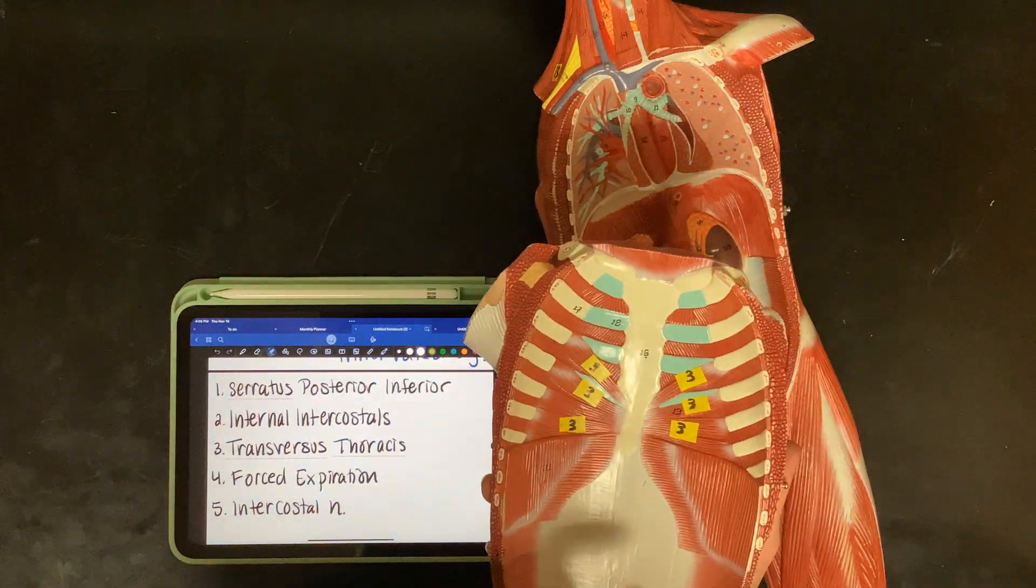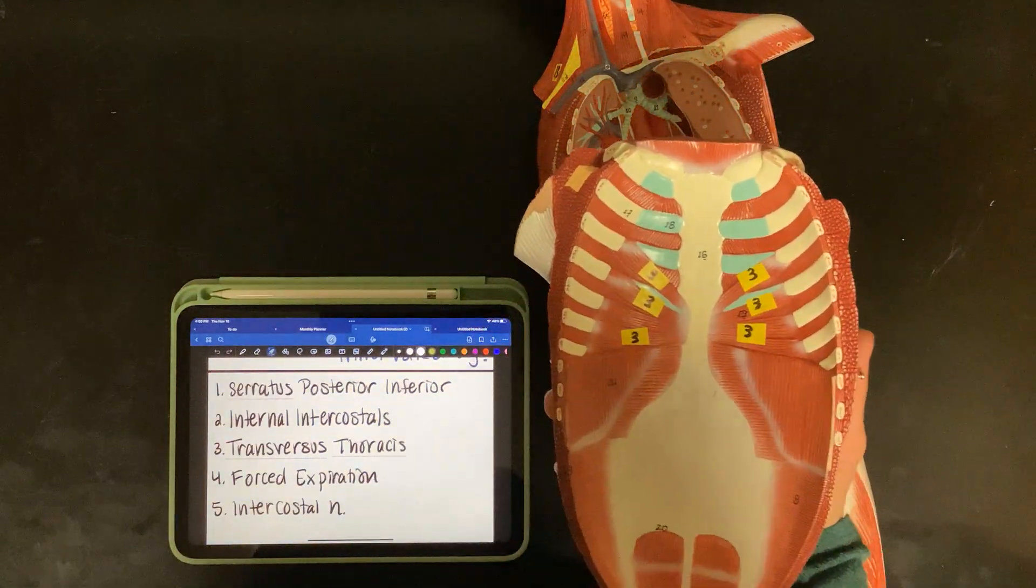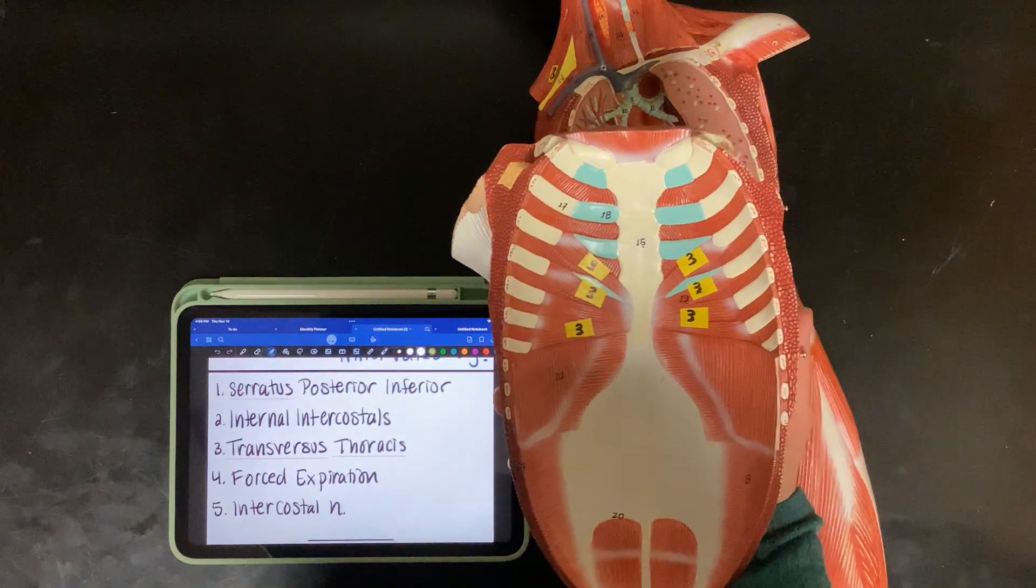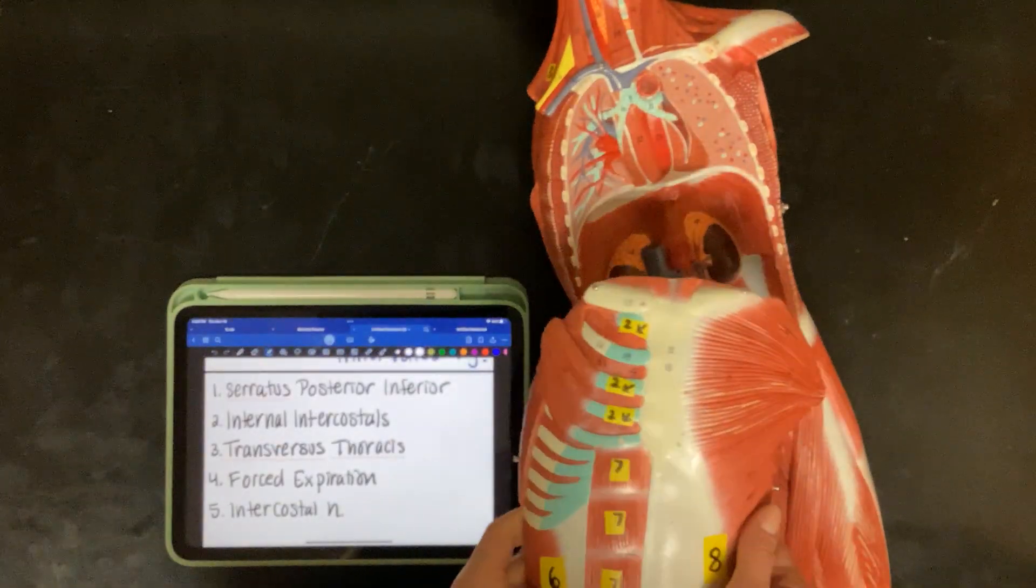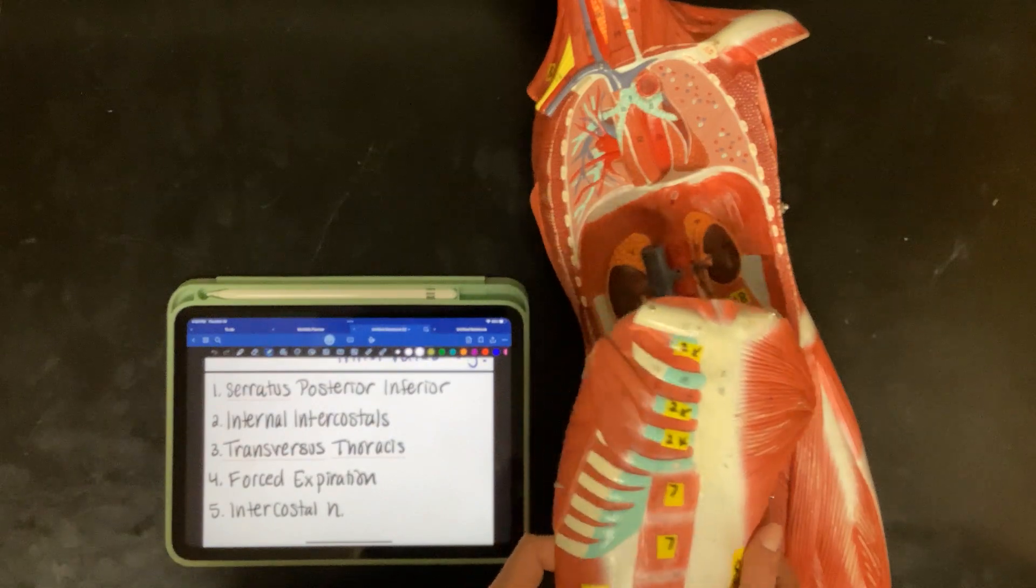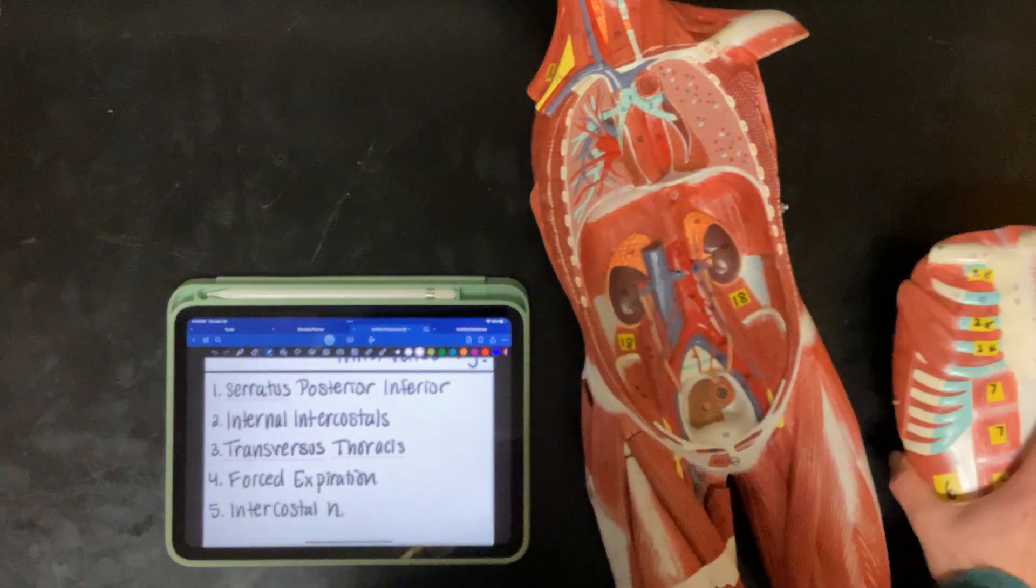And three, we have our transversus thoracis. Their common action is forced expiration, and they're all innervated by the intercostal nerve.